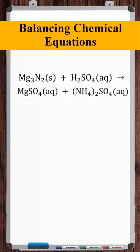Okay, let's balance this chemical equation. You want to start by balancing elements that occur the least amount of times on both sides of the equation.